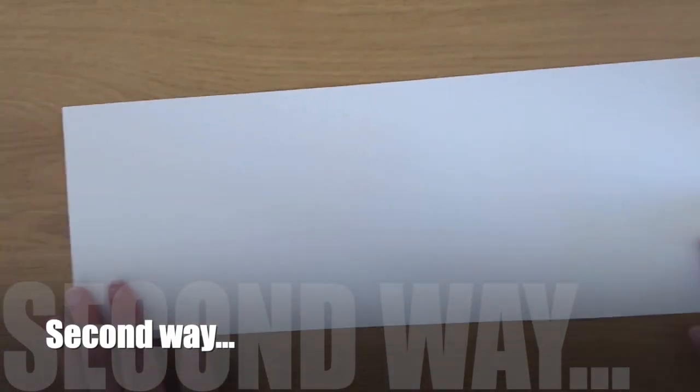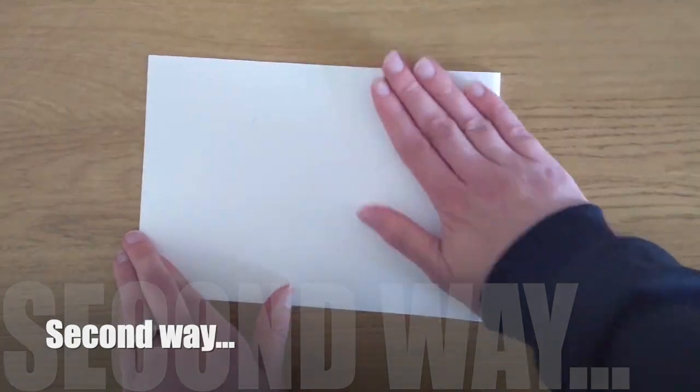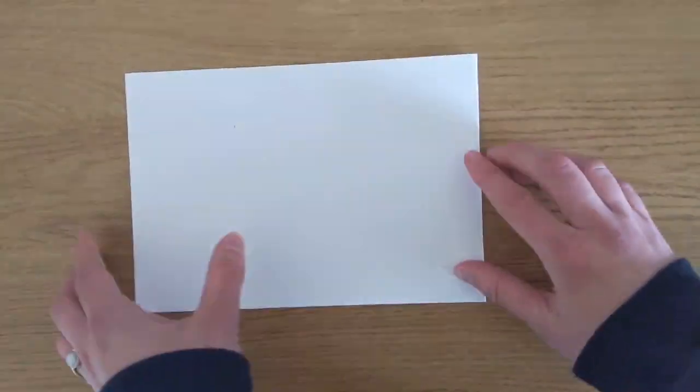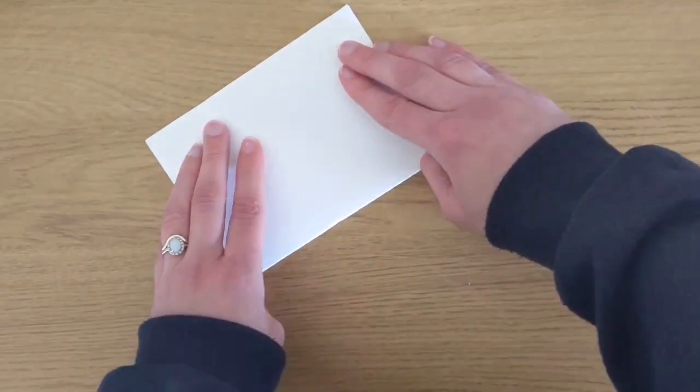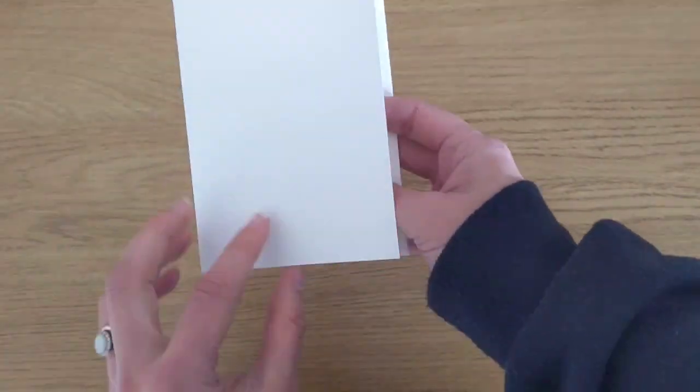The second way to do it is take a long thin strip of paper and fold it in half once. Then fold it in half again so when you open it up you'll have four sections.